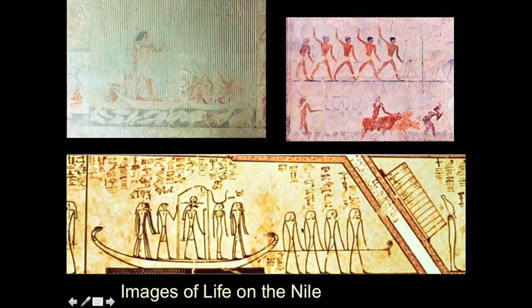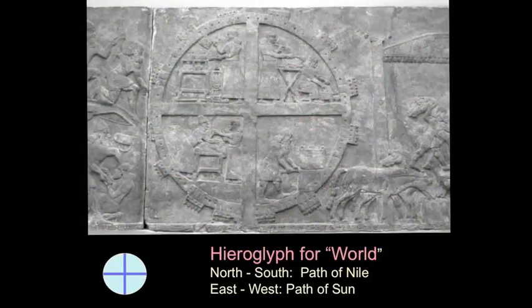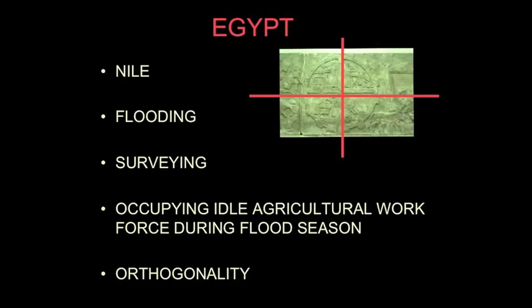The Nile is incredibly important. Here we see an Egyptian hieroglyph for 'world' — a nice little diagram: a gated circle with little towers, and east-west, north-south paths subdividing it. In many ways, that's all you need to understand the organization of form in the Nile Valley.